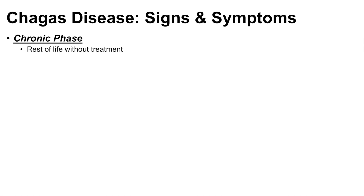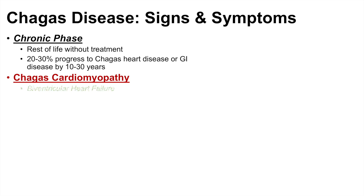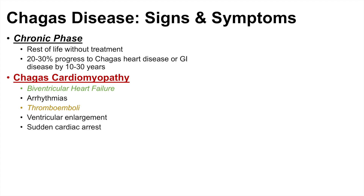Individuals suffering from chronic Chagas disease are considered to have it for the rest of their life if never treated. About 20 to 30 percent of individuals progress to Chagas heart disease or GI disease within 10 to 30 years. Chagas cardiomyopathy is considered a biventricular heart failure. It can lead to arrhythmias, thromboemboli, ventricular enlargement, and sudden cardiac arrest.